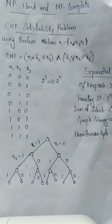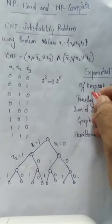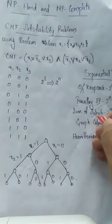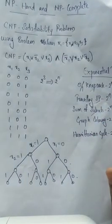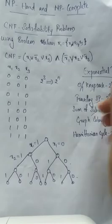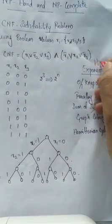Examples include the traveling salesman problem and subset sum problem. These are optimization problems that can take exponential time. These are NP-hard problems.